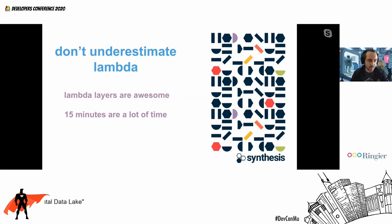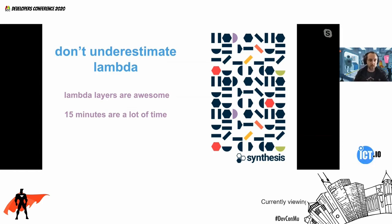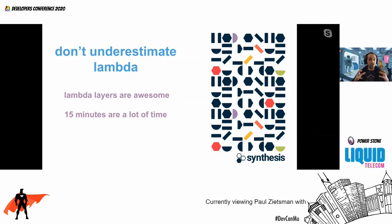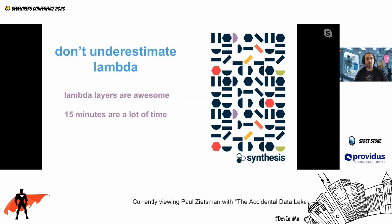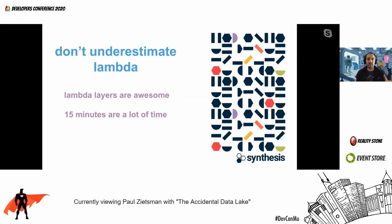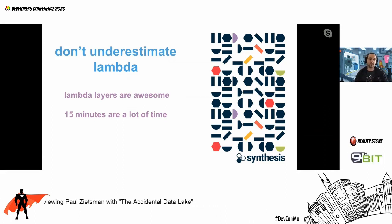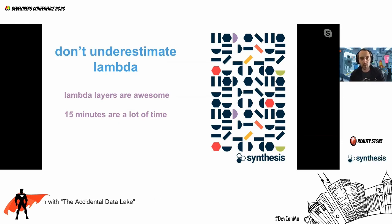Lambdas are immensely powerful — don't underestimate them from an AWS point of view. Lambda layers are really cool. Recently they introduced EFS for Lambda, so you can attach storage to them. And they run for 15 minutes — 15 minutes is a long time, you can do a lot of stuff. So use them to a point where they don't make sense anymore, and then look for something else.